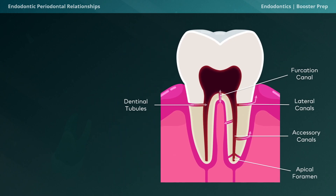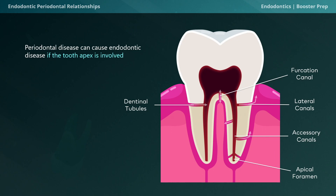What do we need to know about this? First, keep in mind that periodontal disease can cause endodontic pathosis, but it's pretty rare. It only really happens if the tooth apex is involved. Teeth get extracted long before the time it takes a periodontal lesion to reach the tooth apex, which is why this is a rare occurrence.